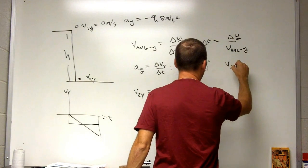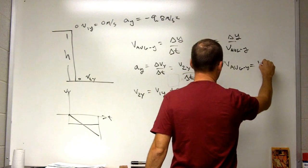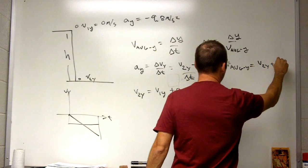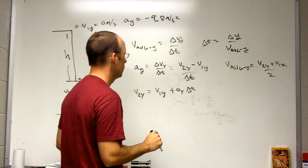So v average y, maybe I say things twice too, is going to be v2y plus v1y over 2.